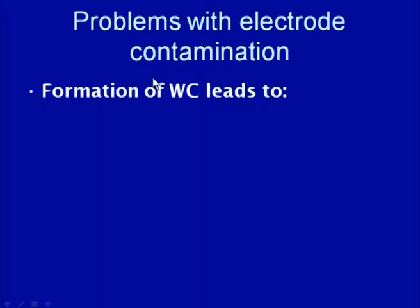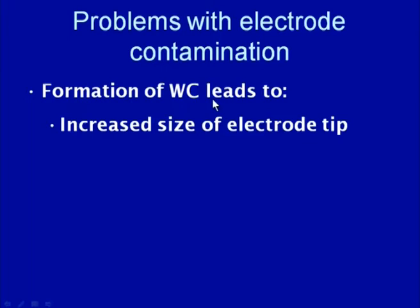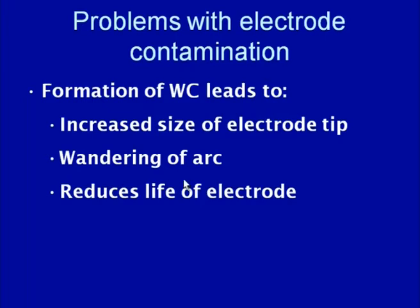Once tungsten carbide is formed at the tip of the electrode, it leads to many undesirable effects, including changes in the geometry of the electrode tip. The change in geometry causes the arc to wander, because the contaminated electrode tip does not easily release electrons. This also reduces the life of the electrode due to continuous wear and tear of the electrode tip from the formation of tungsten carbide at high temperature. This method is therefore not very favorable from the electrode life standpoint, though it can be used for non-critical applications.